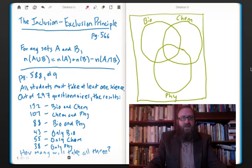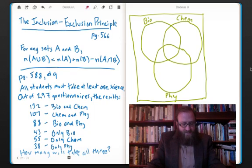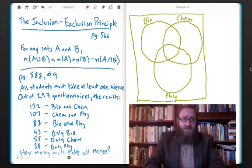As you see, I've got the inclusion-exclusion principle up on the big board. You can read along on page 566. For any sets A and B, the number of elements in the union of A and B equals the number of elements in A plus the number of elements in B minus the number of elements in the intersection between A and B, which is interesting.